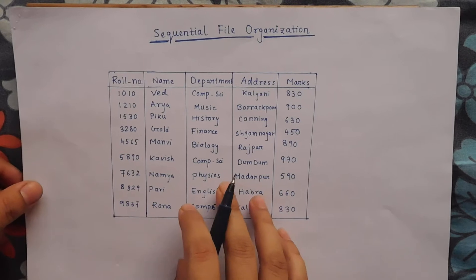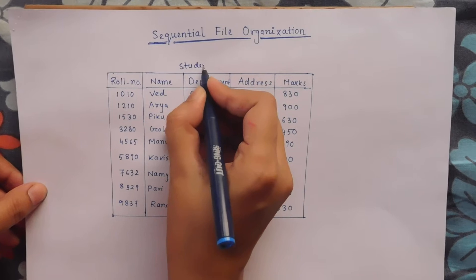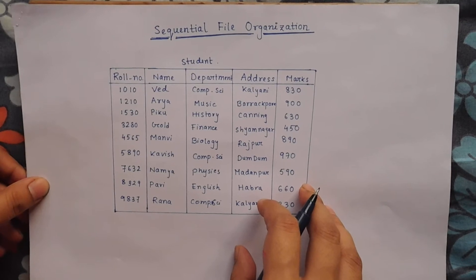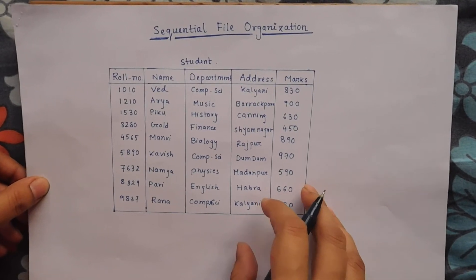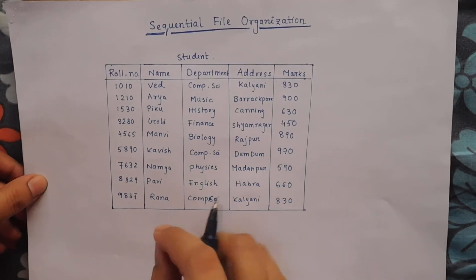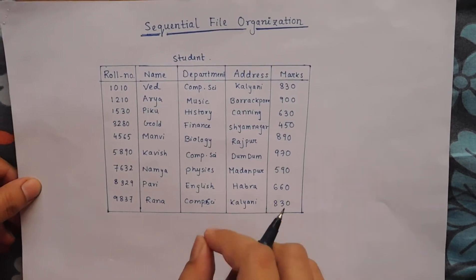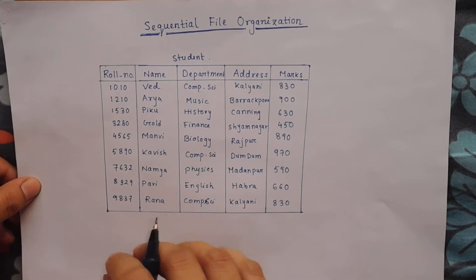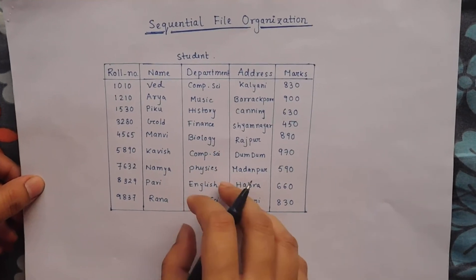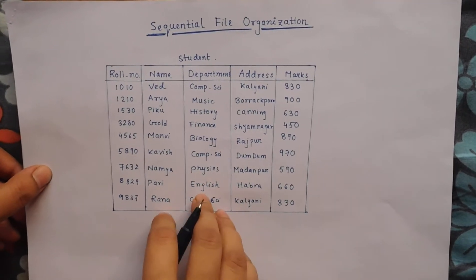Suppose there is a file named student. This file resides permanently on the disk. It is only brought into primary memory when some update is needed — suppose you want to insert some data in this file, or delete, or any updation. Then only a part of it is loaded into primary memory, not the whole file.